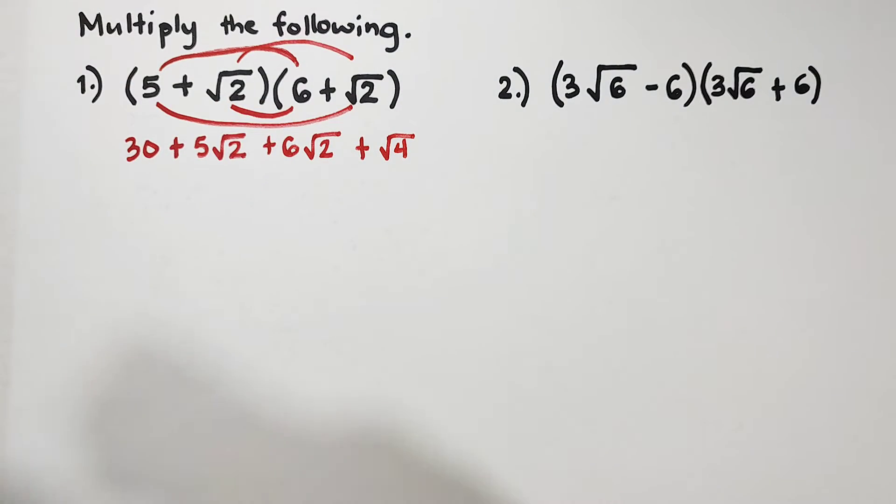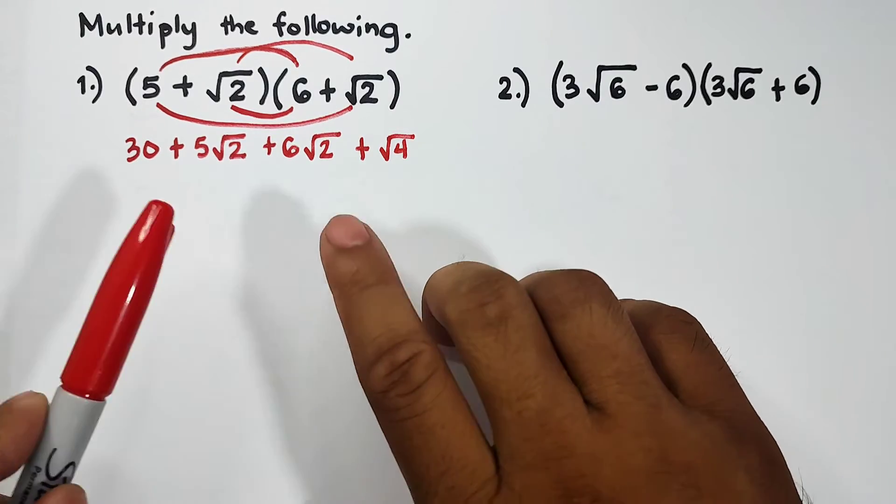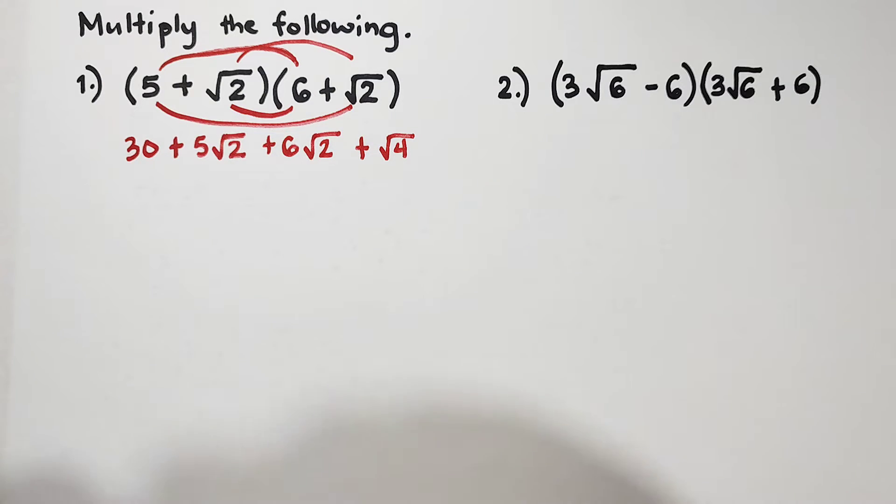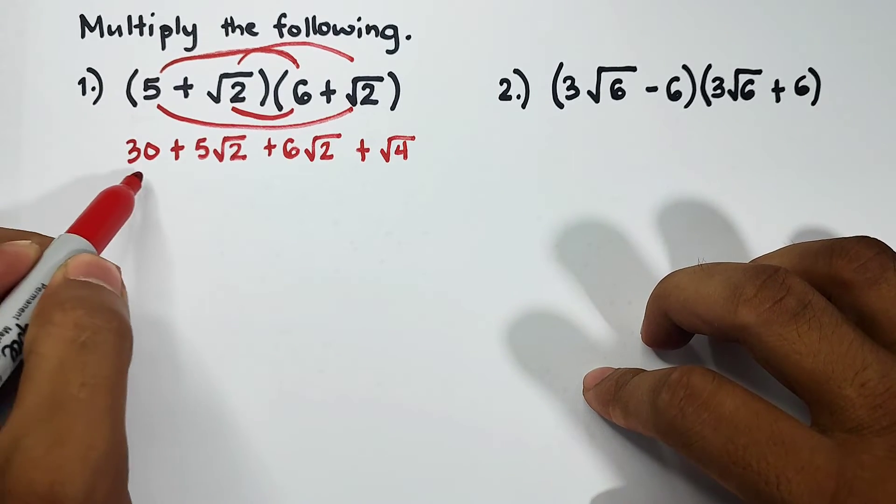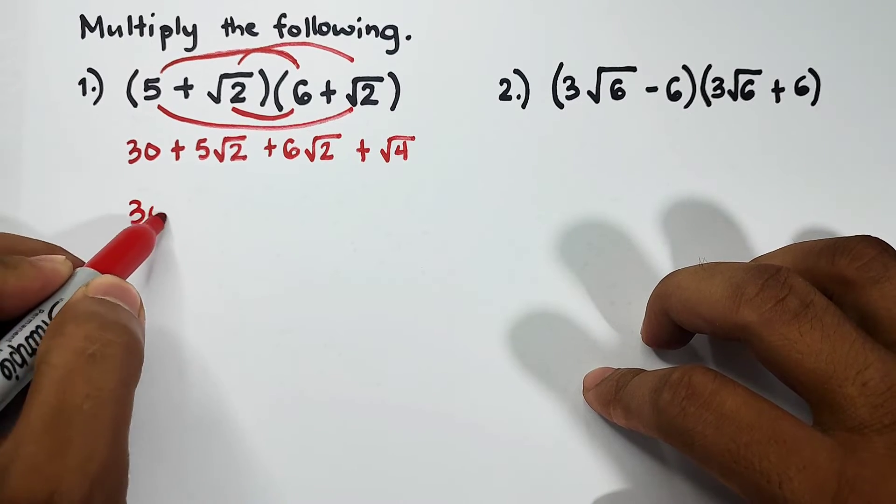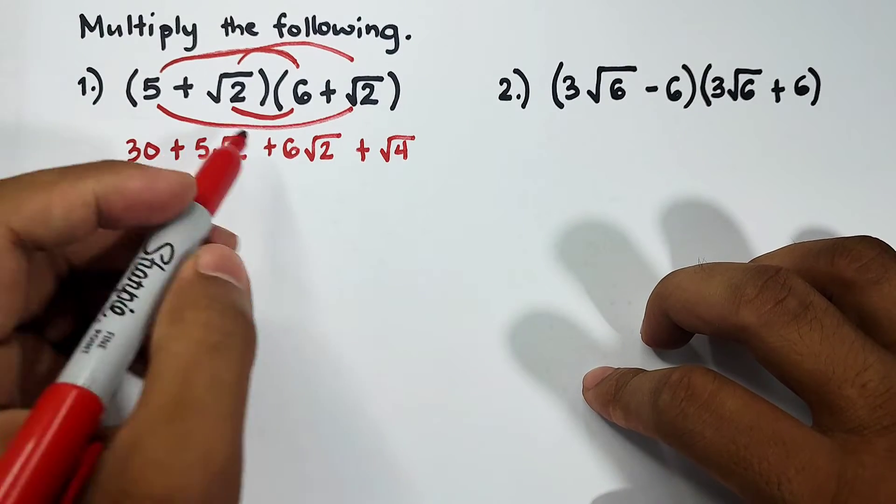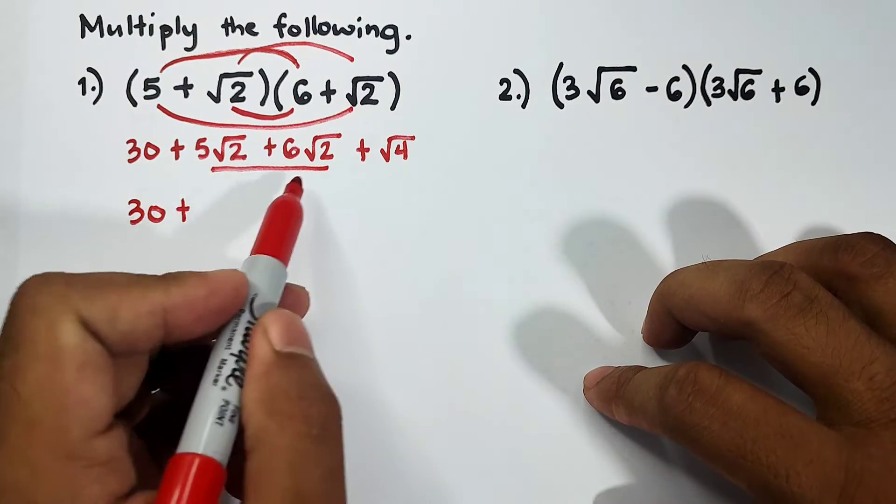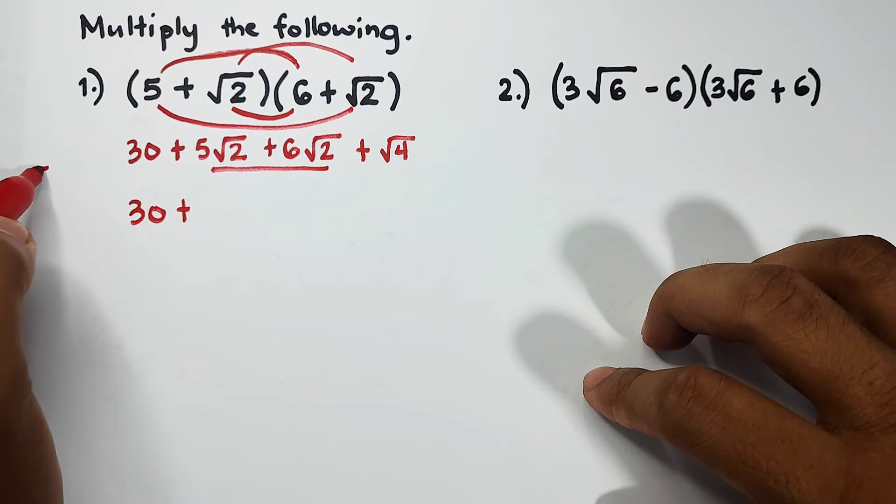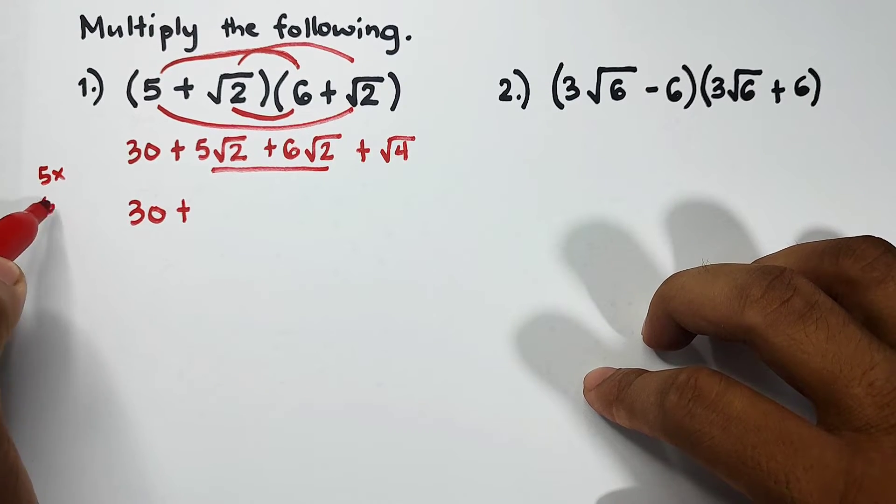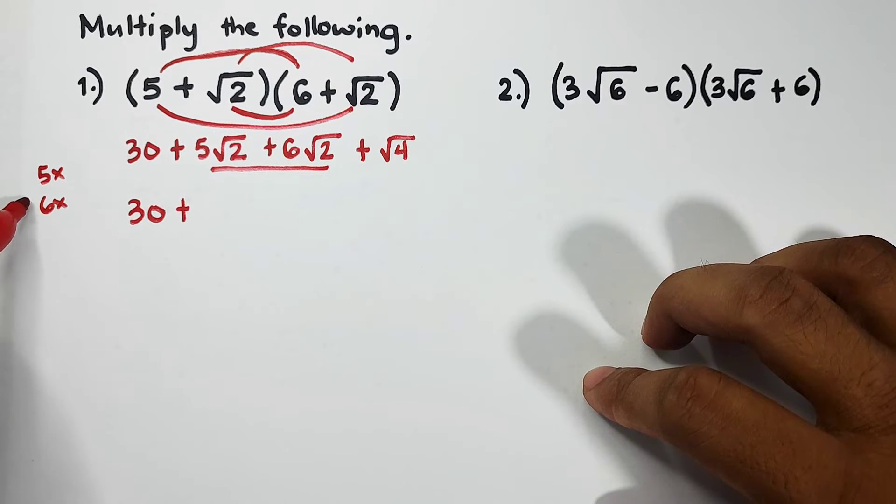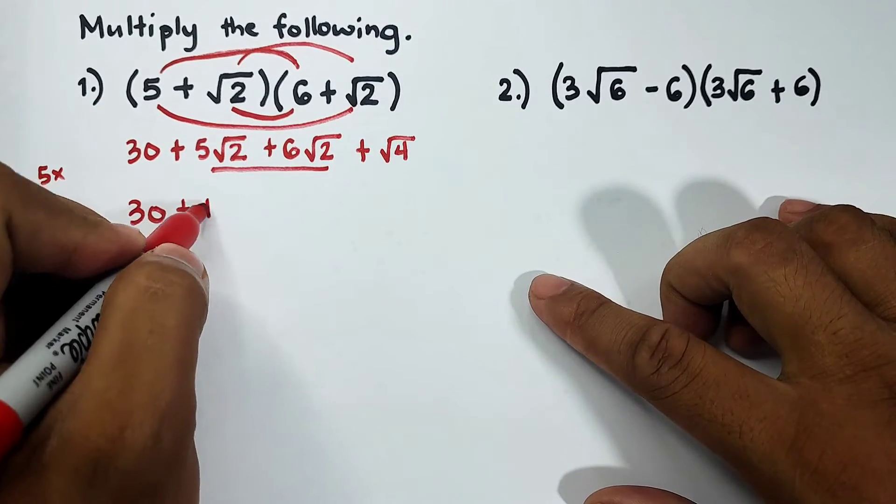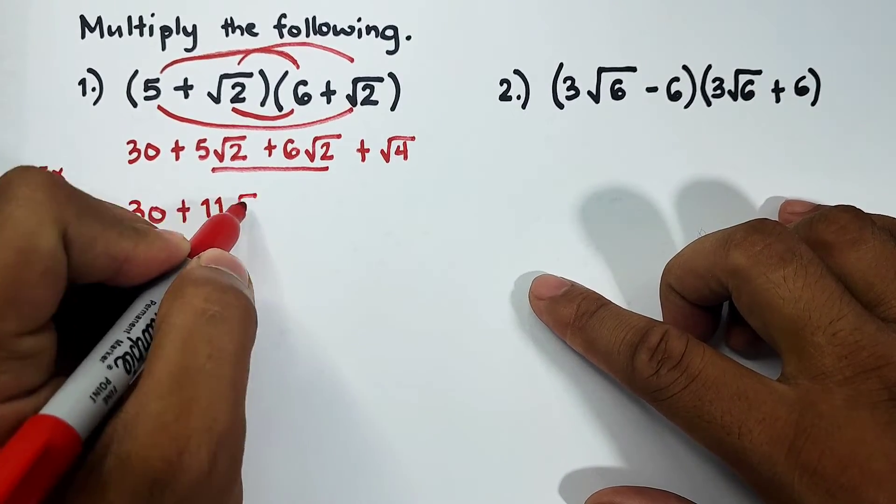After doing the FOIL method we need to combine like terms and simplify the square root of 4. We have 30. These two terms can be simplified like 5x and 6x—when we add them it will give you 11x. So the answer here is plus 11 square root of 2.